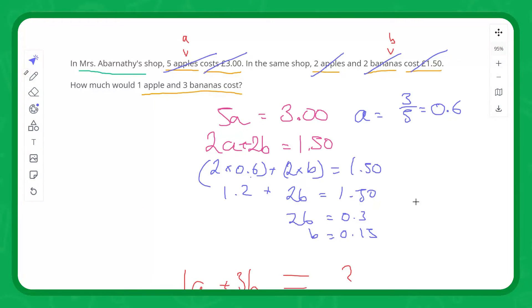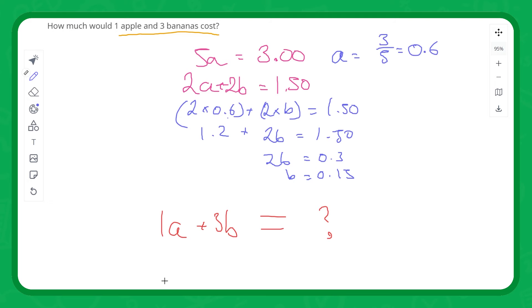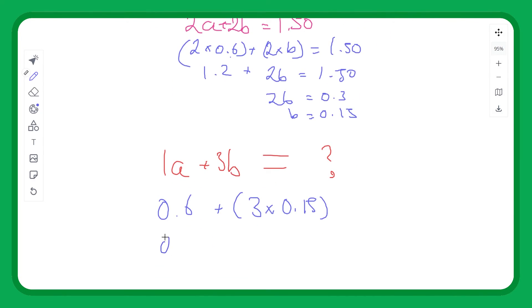Let's put this in, in which case. So 1a is equal to, in this case, 0.6, and 3b would be the equivalent of 3 times 0.15, so in this case that would be 0.6 plus 0.45 equals 1.05. So there's our answer.